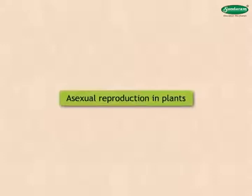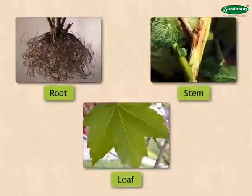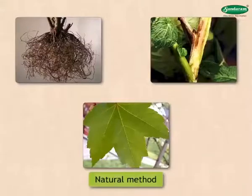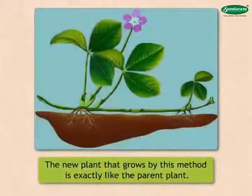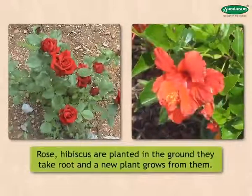Asexual reproduction in plants takes place through different means. Reproduction from parts of the plant such as the root, stem, or leaf is called vegetative reproduction. This is a natural method, and the new plant that grows by this method is exactly like the parent plant. When branches of plants like the rose or hibiscus are planted in the ground, they take root and a new plant grows from them.